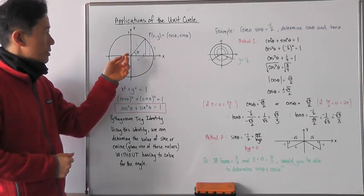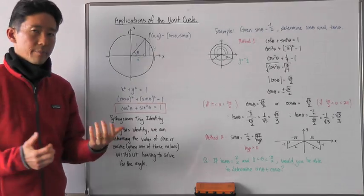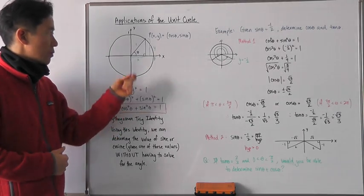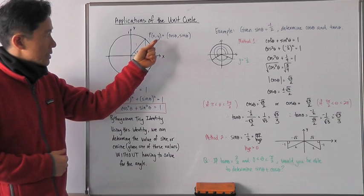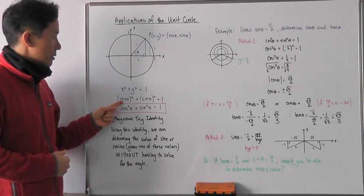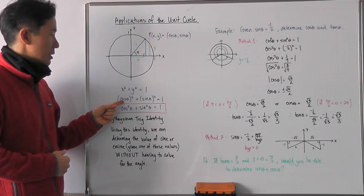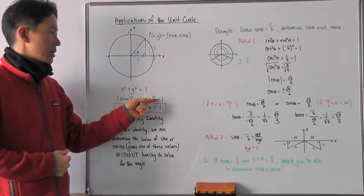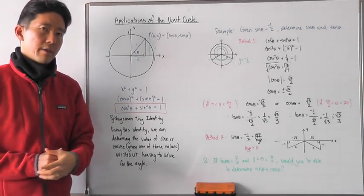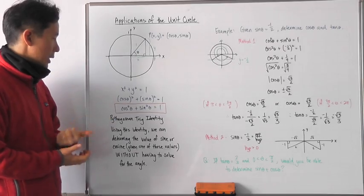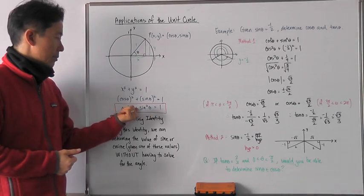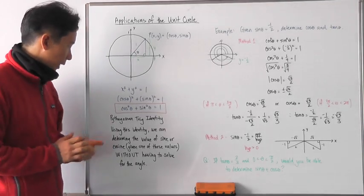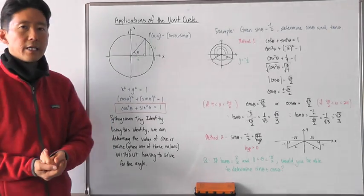Now if we use the right triangle and the Pythagorean theorem to say that x squared plus y squared is equal to 1, then we know that this association will also yield cosine squared theta plus sine squared theta is equal to 1. This is called the Pythagorean trig identity.